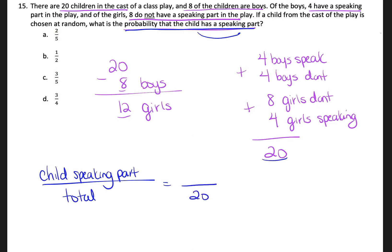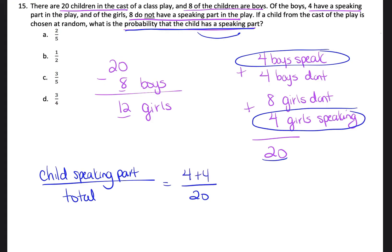The children that have speaking parts: there are 4 boys that speak and 4 girls that are speaking. So 4 plus 4 — there are 8 children who have a speaking part out of 20.